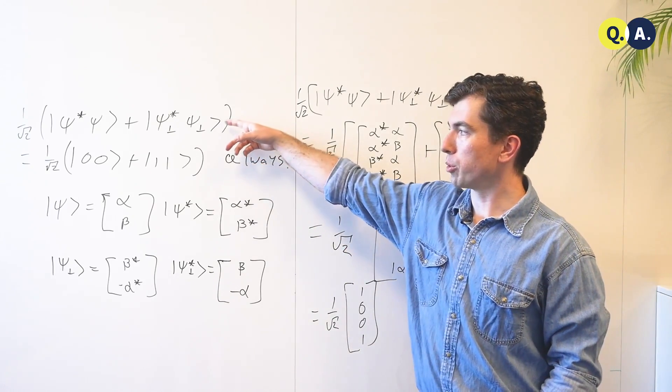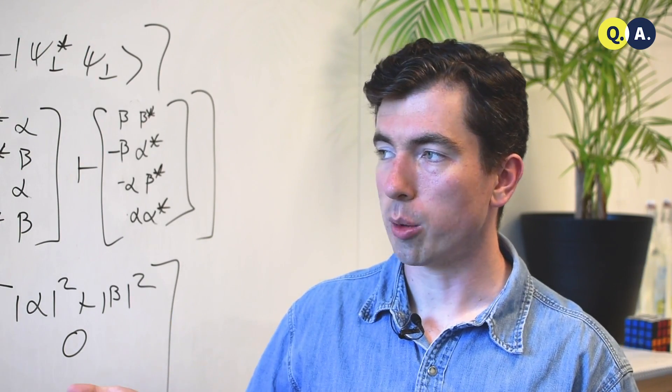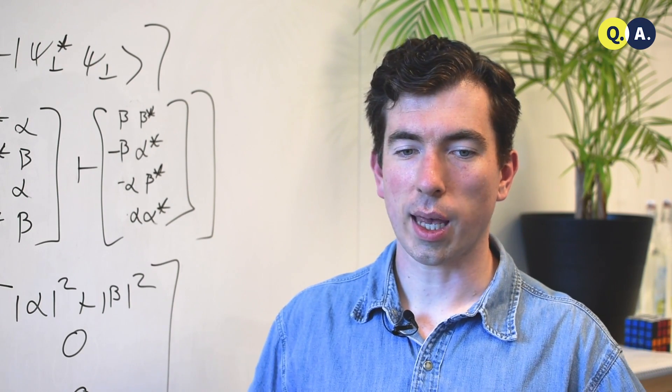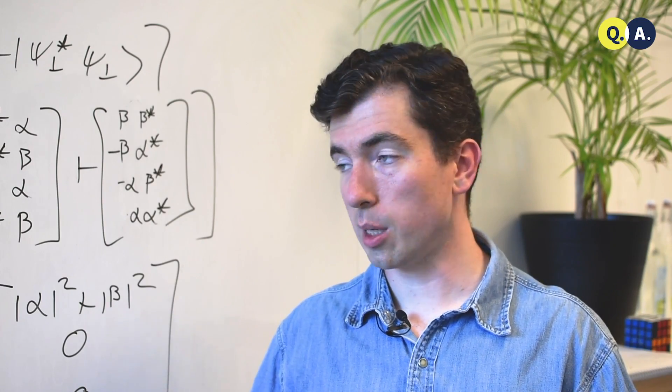This implies, for example, that if Alice and Bob share a bell state, and Alice measures out in a 0, 1 basis, she can get a state 0 or 1, and she can tell that Bob has the same state.